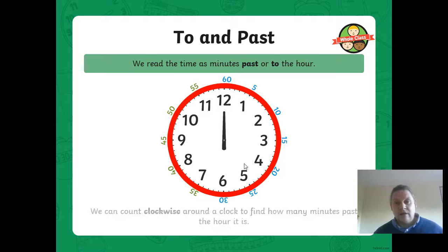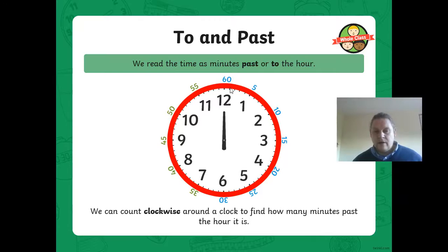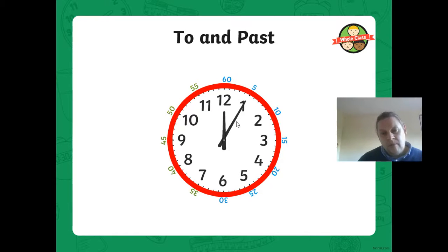We read the time as minutes past or to the hour. We think of that as our monster - on this side we've gone past the monster, and once we pass 30 we're on our way to the monster. We can count clockwise around the clock to find out how many minutes past the hour it is - jumping to the 5, 10, 15, 20, 25, 30. So what time is this? If the minute hand is pointing to the 5, it's 5 minutes past 12.